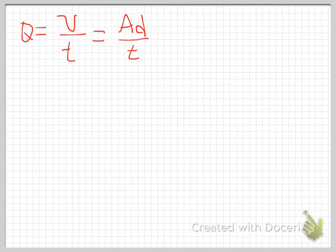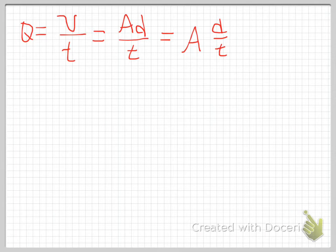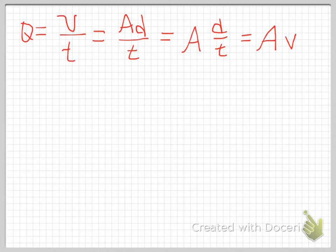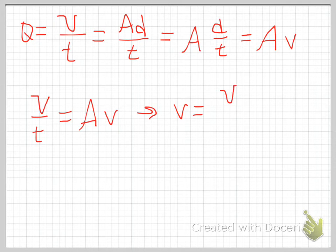I know that the flow rate Q equals volume per unit time, and since volume equals A times d, that's A times d per unit time, or A times d over t. Looking at d over t, it has units of meters per second — that is, in fact, a velocity. So I can rewrite this as Q equals A times v. Rearranging, volume over t equals A times velocity.